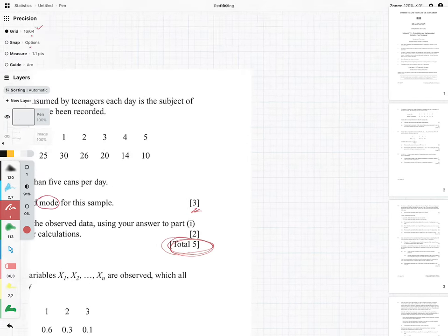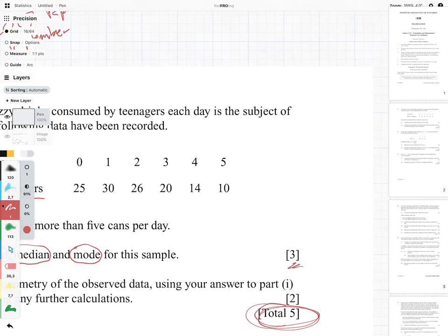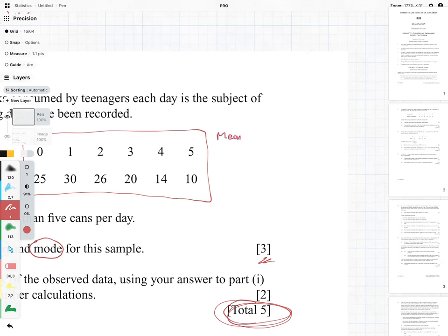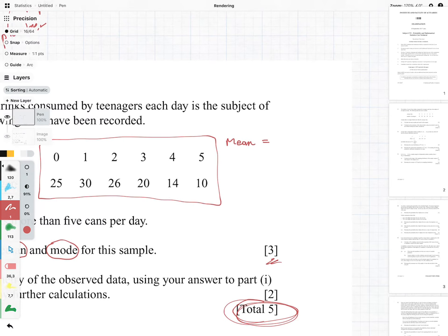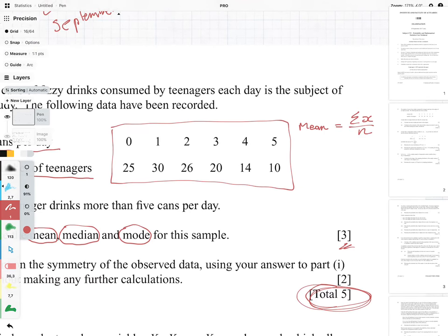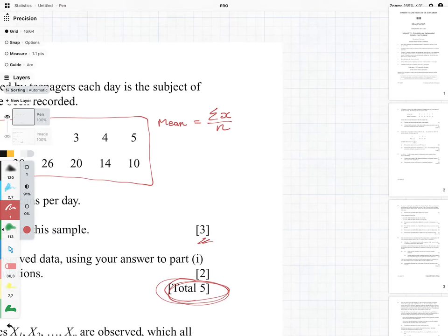So this is our data over here. One way of thinking about it is that we have 25 zeros, we've got 30 ones, we've got 26 twos, 20 threes, 14 fours, and 10 fives. Which means if we're going to calculate the mean, we first remember the mean is equal to the sum of the x's divided by n. We first need to add up all of these numbers and we've got 25 plus 30 plus 26 plus 20 plus 14 plus 10, so that is equal to 125.